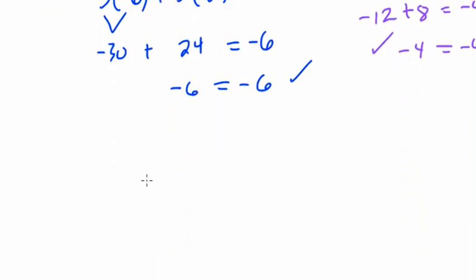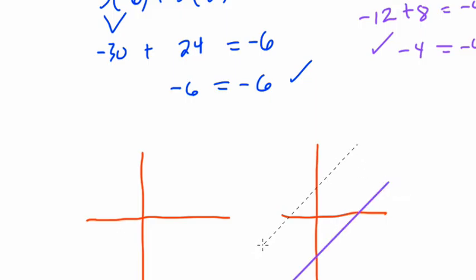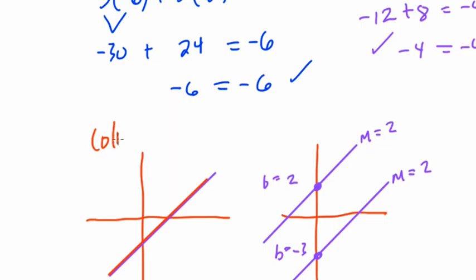It could be, let me just do some other sketches. You could have a situation, two other situations. It could be there's no solution to the system. That means there's no point that works for both. That would happen if two lines have equal slopes. So, if you have, let's say, a y-intercept of 2, another y-intercept of -3, but the slopes are both the same. Let's say the slopes are both 2. Well, if this happens, if you have two different intercepts but equal slopes, there's not going to be any point that works for both.